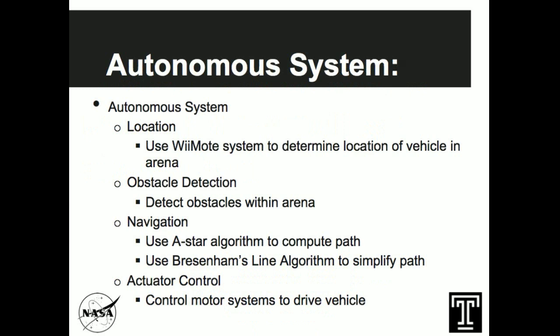For the Lunabotics project we have to produce an autonomous robot, and the way that we chose to go about making our autonomous system was by breaking it down into four different subsystems including location, obstacle detection, navigation, and actuator control. This allows us to make a very simple high level autonomous system and abstract away a lot of the complexity so long as we build very robust subsystems.